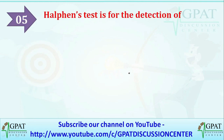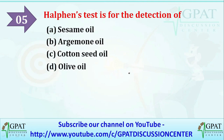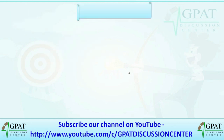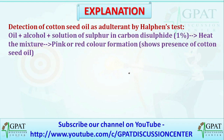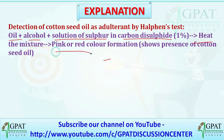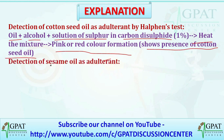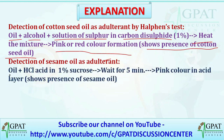The next question: the Halphen test is used for the detection of — options are sesame oil, argemone oil, cottonseed oil, or olive oil. The correct answer is cottonseed oil. The procedure: oil plus alcohol and a solution of sulfur in carbon disulfide (1%) are taken and heated. If a pink or red color forms, it shows the presence of cottonseed oil. For detection of sesame oil, oil plus a ferric chloride solution is used and waited 5 minutes; pink color in the acid layer shows presence of sesame oil.